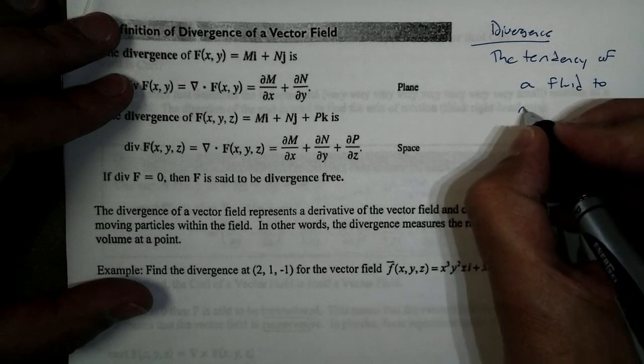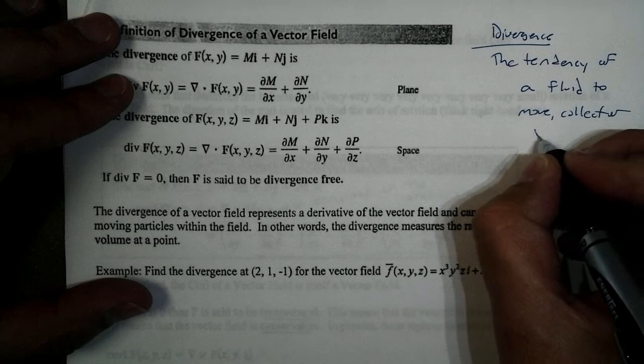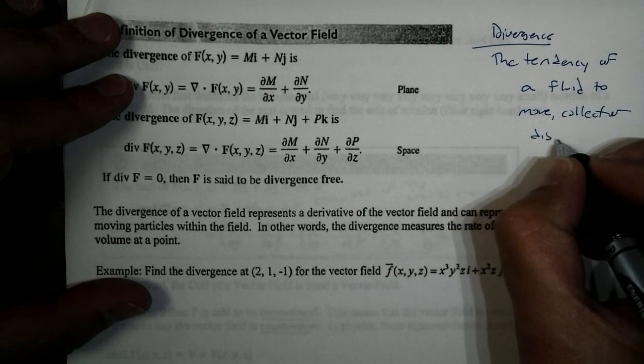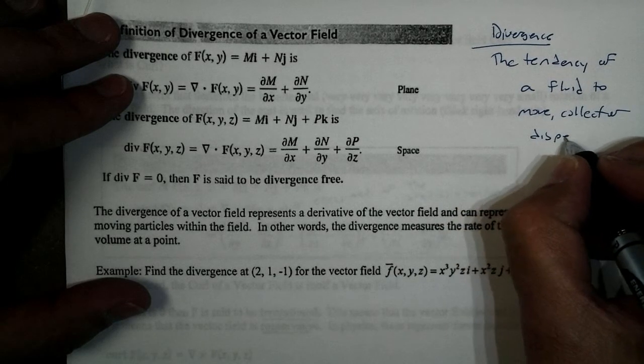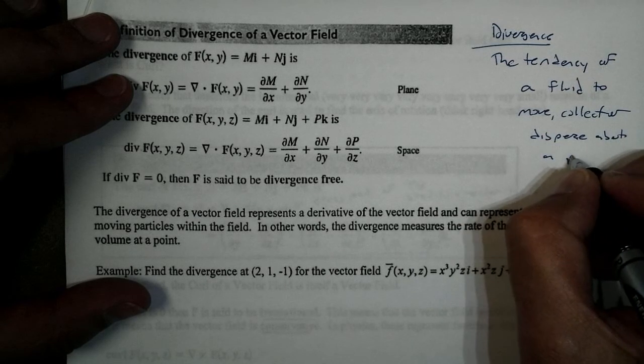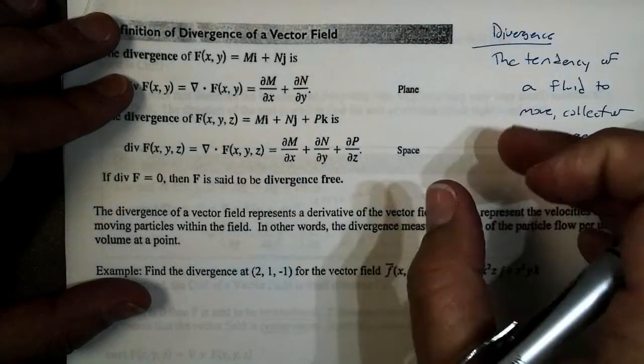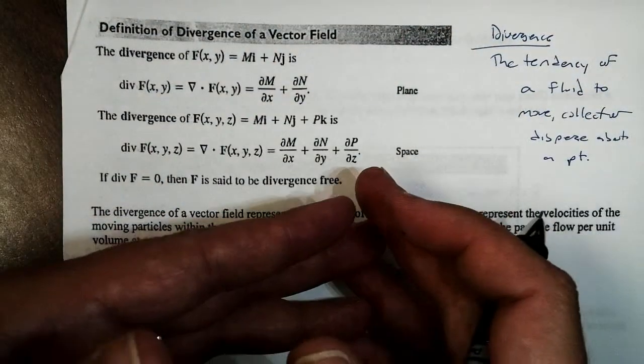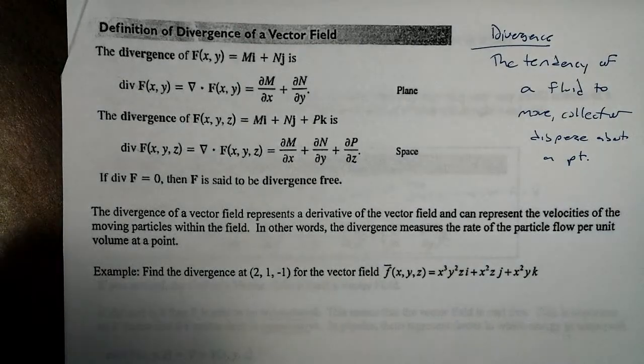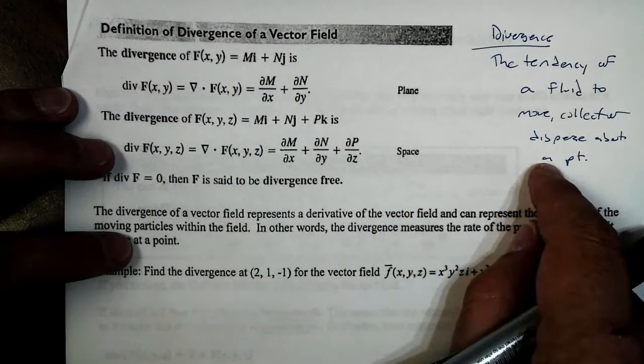Either to move, or collect, or disperse about a point. In other words, where the curl will give me its rotation, the divergence kind of gives me its velocity. We can kind of think of that. The fluid's velocity at a certain point.